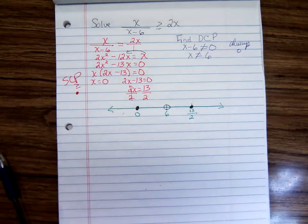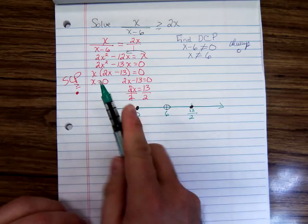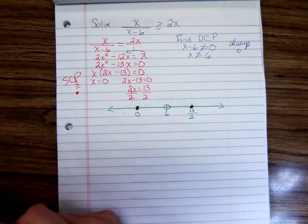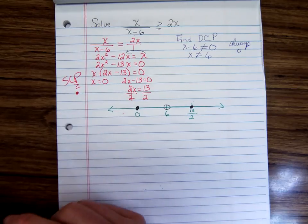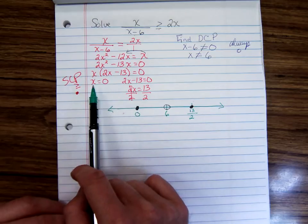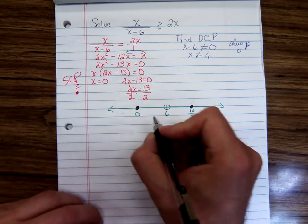And then test as many of these intervals as you want. There were no repeated factors here, and so I guess formally we could say there's no even multiplicity in these things. So it's going to alternate. So test one or two of them. I think I'll test the number 1.